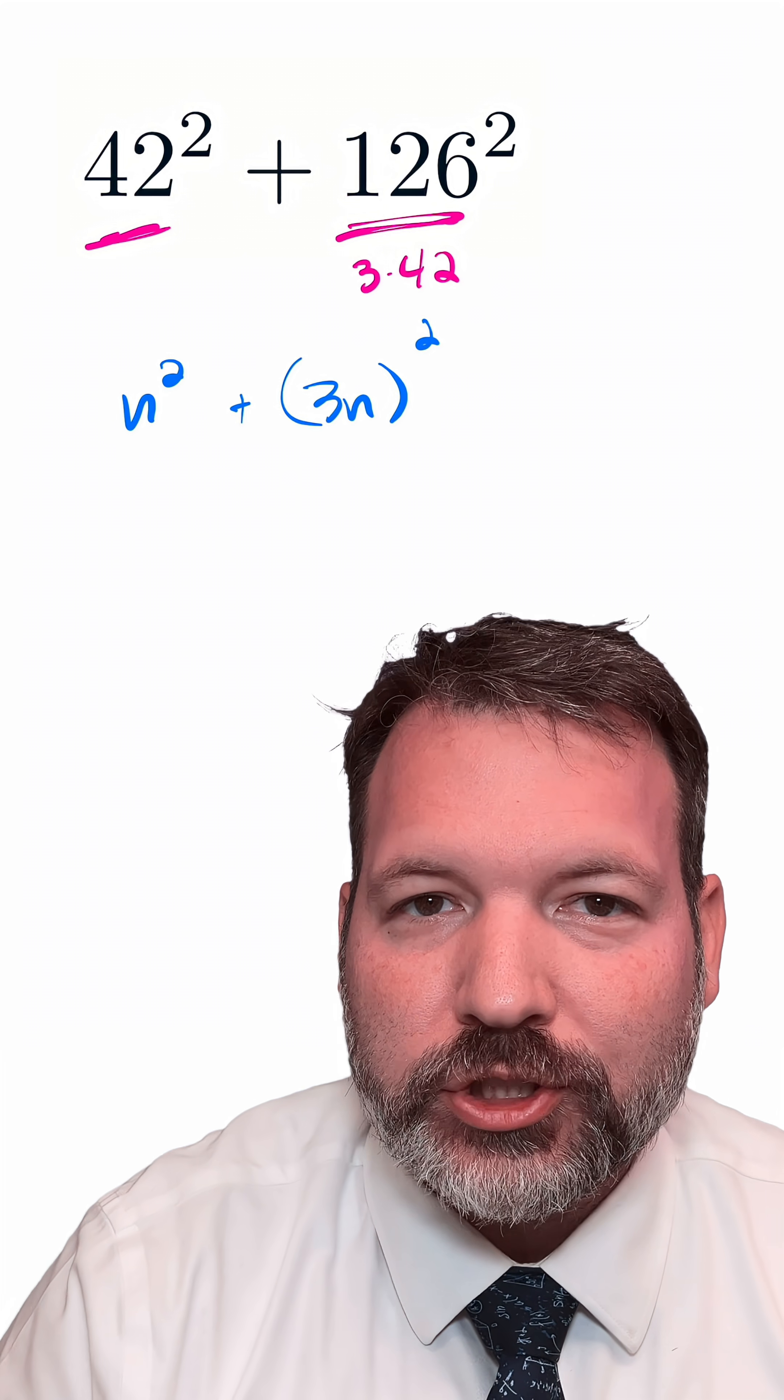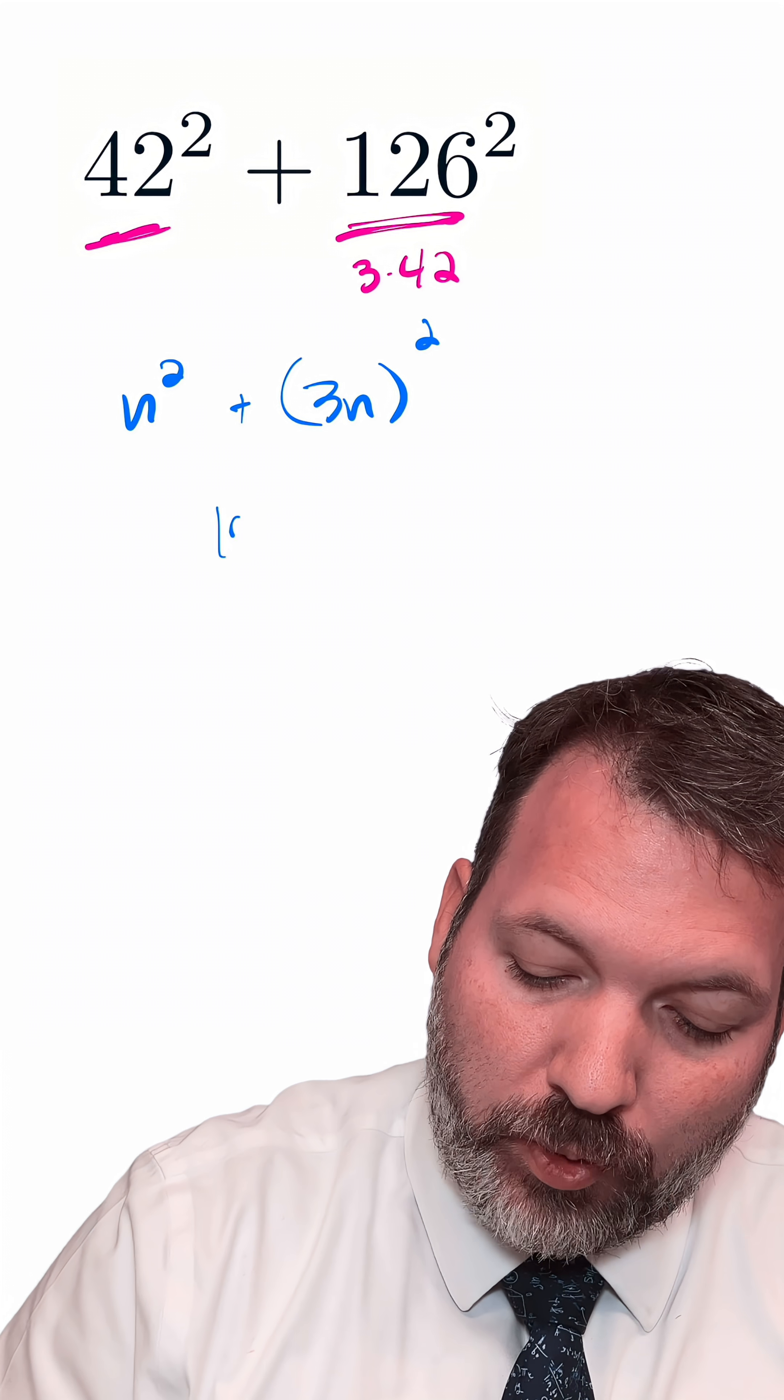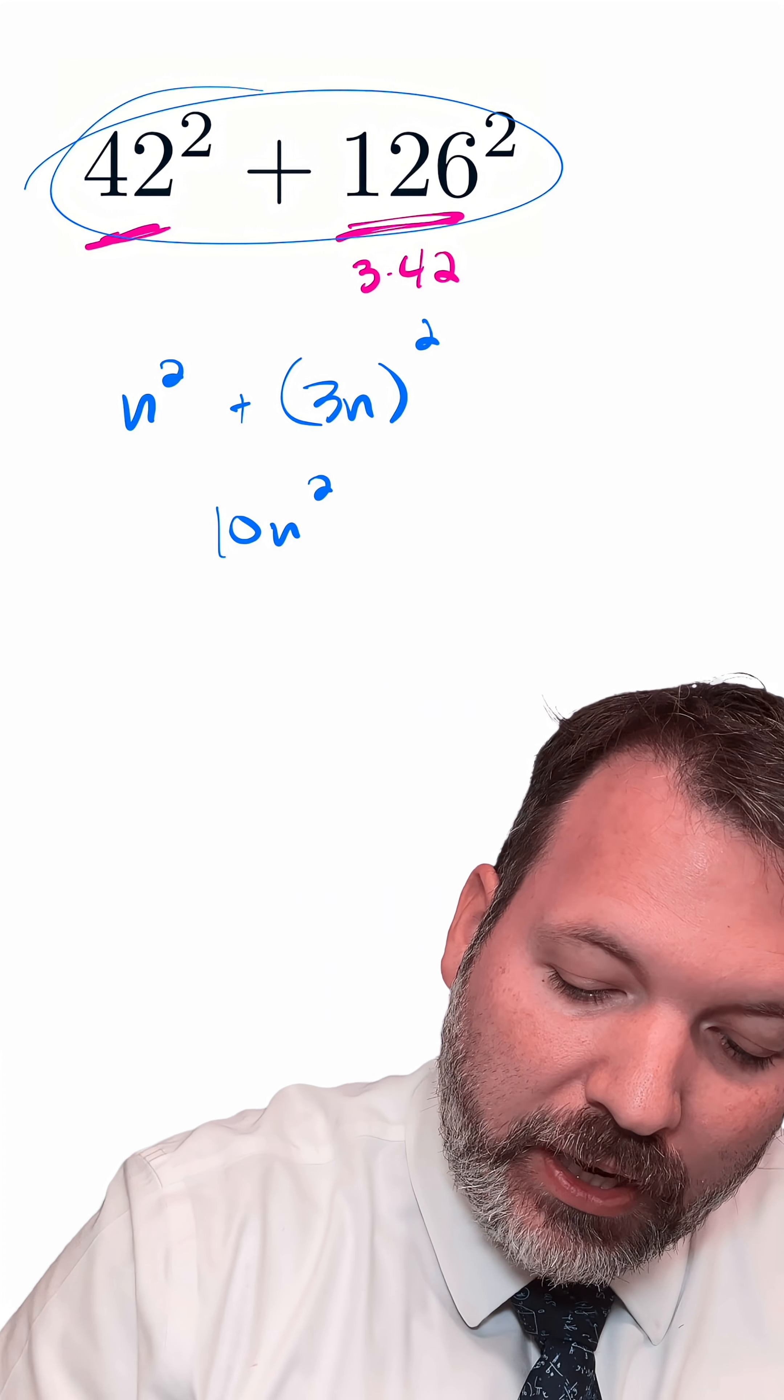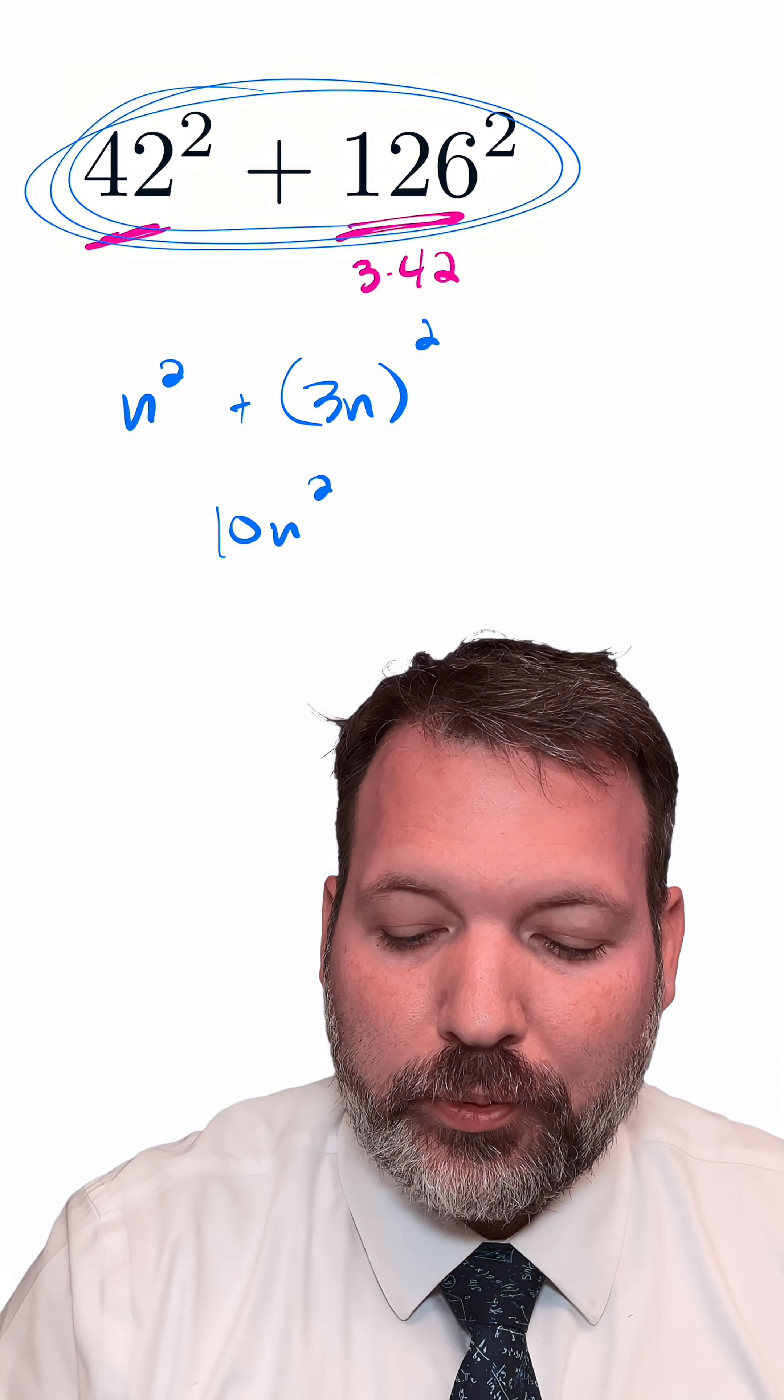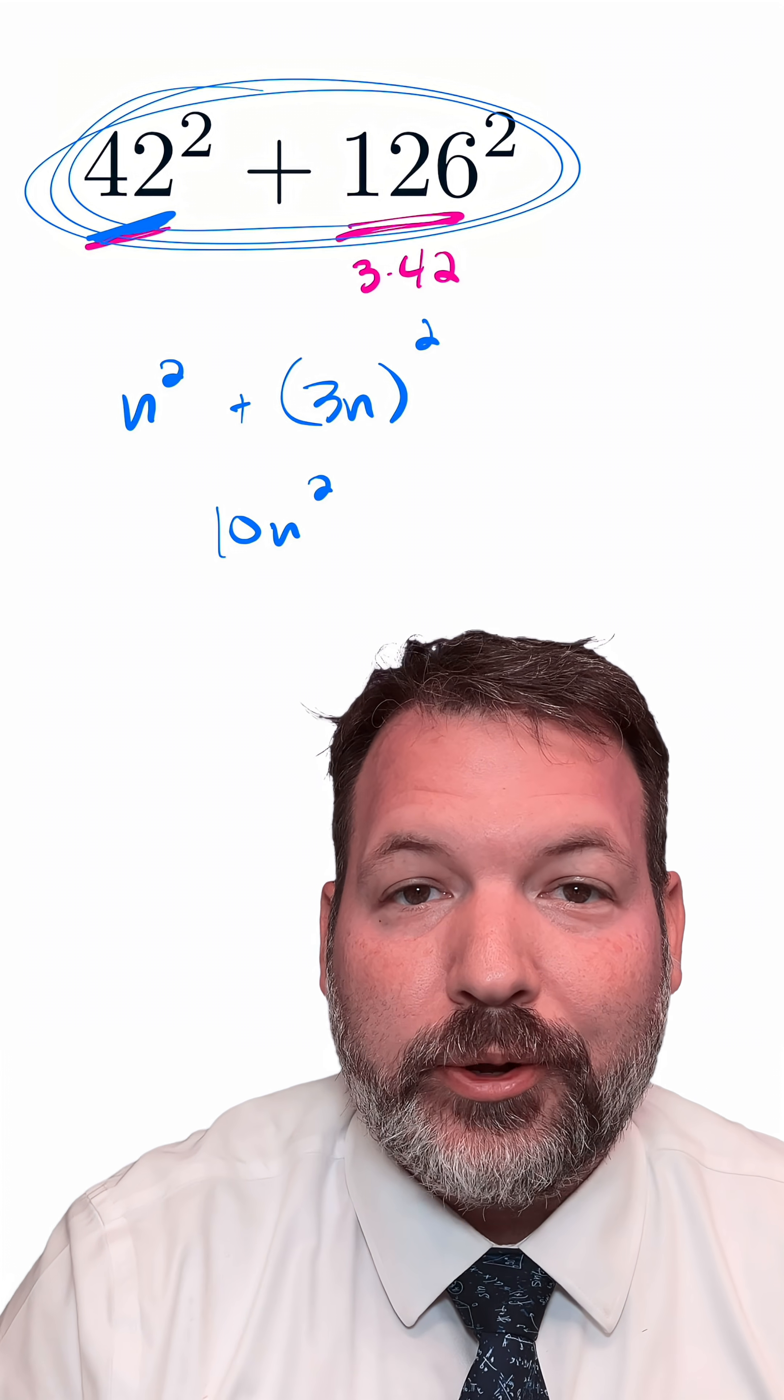Once we put it this way, we can see the more general pattern. Any number squared plus 3 times that number squared will always equal 10 times that number squared. So computing any problem like this in your head really only requires your ability to square the first number and then just add a zero to whatever that is.